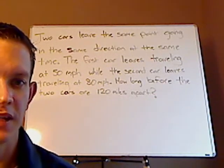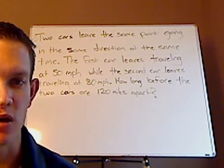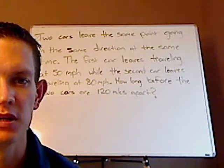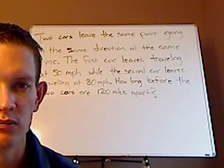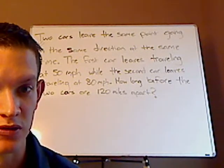The first car leaves traveling at 50 miles per hour while the second car leaves traveling at 80 miles per hour and they maintain that constant speed. How long before the two cars are 120 miles apart?